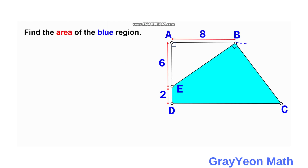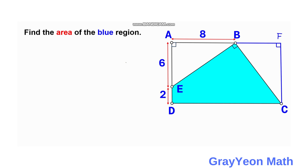There are several ways to solve this problem. One approach is to draw a horizontal line from point B downward perpendicularly to point C, forming a large rectangle. We label the new point as F, giving us rectangle AFCD. We then find the total area of AFCD and subtract the areas of the two white right triangles.